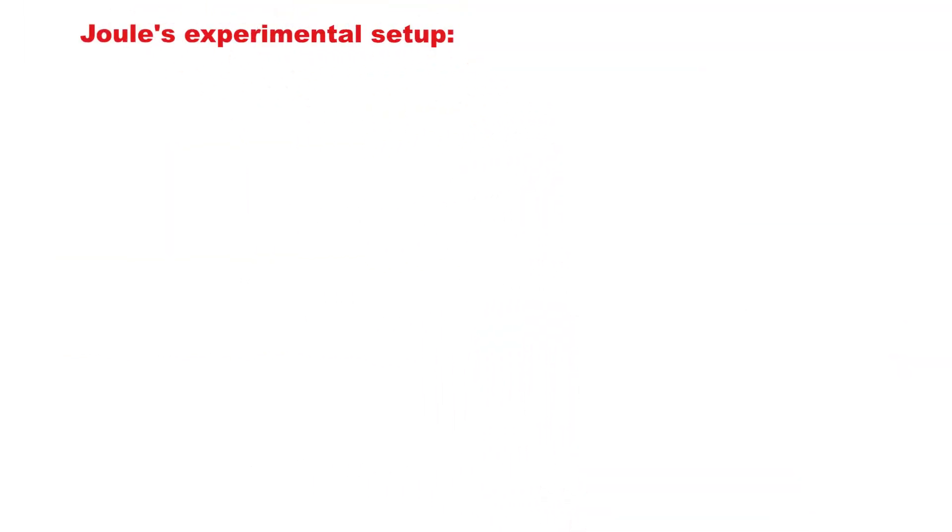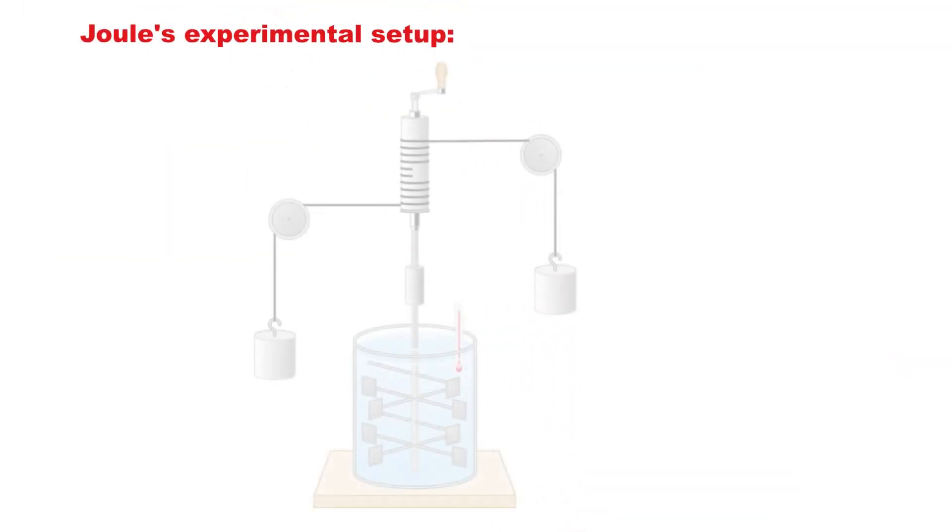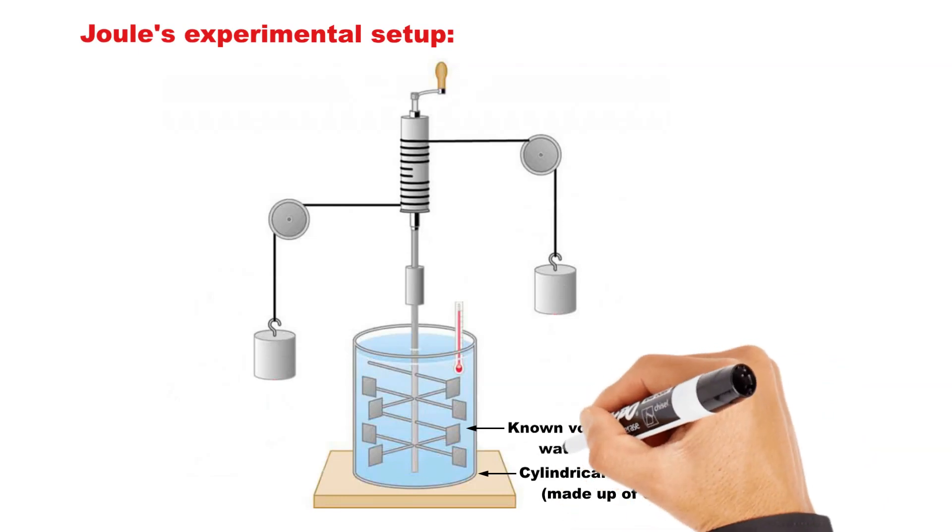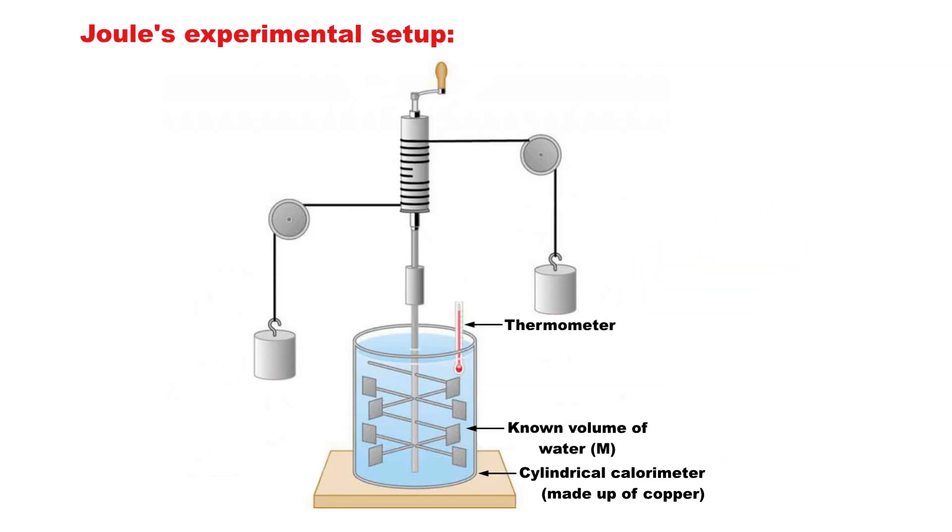Joule performed experiments to find out the value of J. His experimental setup to determine the mechanical equivalent of heat is shown in the screen. The apparatus consisted of a cylindrical calorimeter made up of copper. A known mass of water M was taken in the calorimeter. The calorimeter was covered with a lid. To measure the change in temperature of water, a thermometer was used.